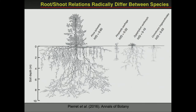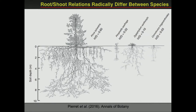Different species actually have very different root properties. You might think there is a specific relation between above-ground mass and below-ground mass — but that's actually not the truth. You can calculate the height-to-depth ratio for different plant species, and it's all over the place. Just because a plant is small doesn't mean it has a small root system, and just because a plant is very big doesn't mean there is a huge root system.